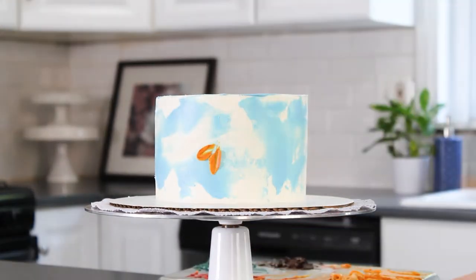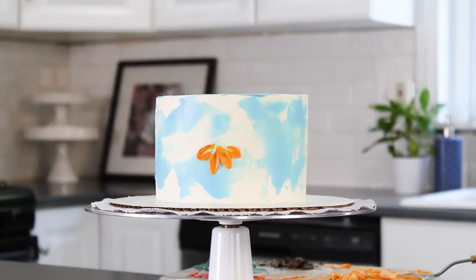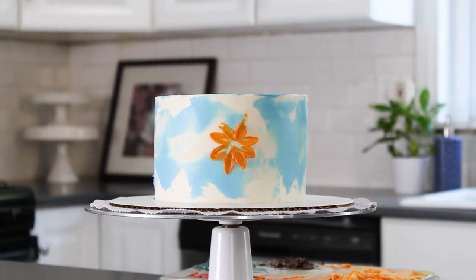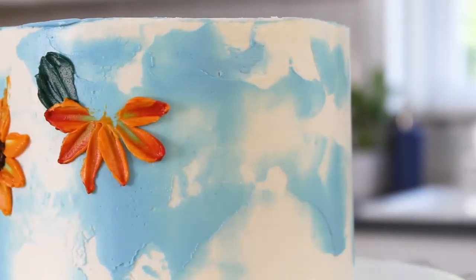All right, so now we're ready to paint flowers on our cake. It's a little more difficult painting flowers on the side of a cake, so just keep in mind you might have to hold the palette knife at different angles. And don't forget, you can always go back and add more buttercream or fix things that didn't turn out exactly how you wanted.